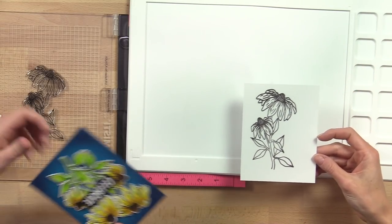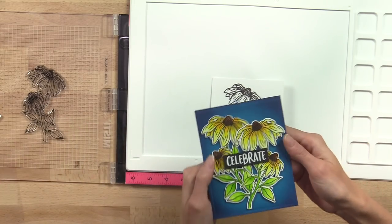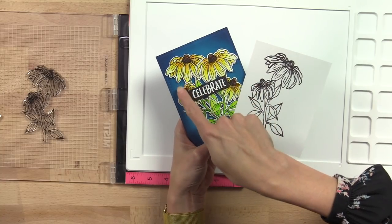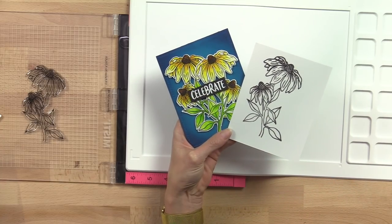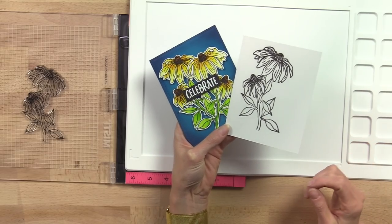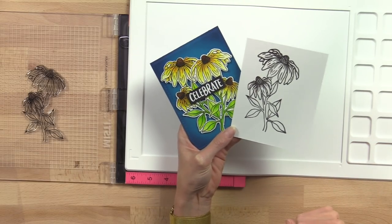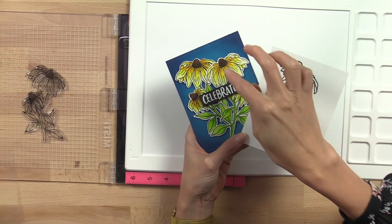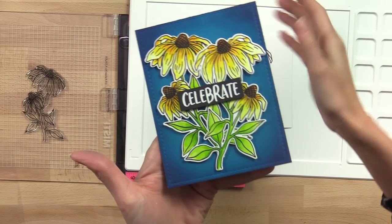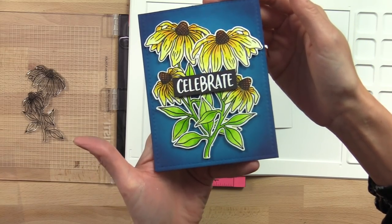Why don't you grab the finished card so we can show everybody that. So this is the finished card. Over here is the mirrored stamped Black Eyed Susan. That's the mirrored one, and that's the original. Hold it up so you can see. And I just watercolored these with my Distress Inks again.